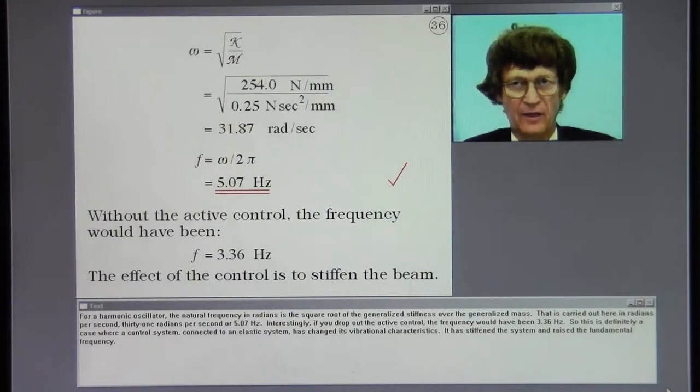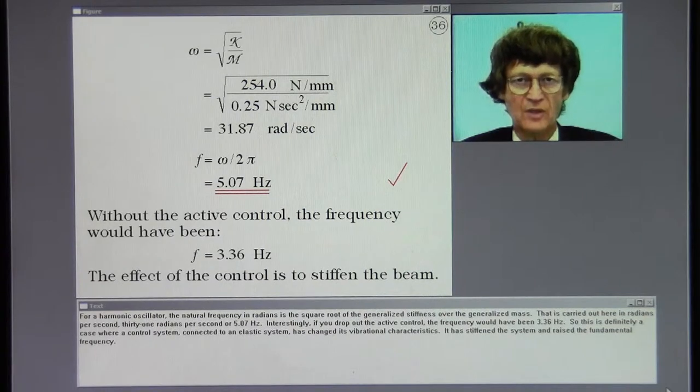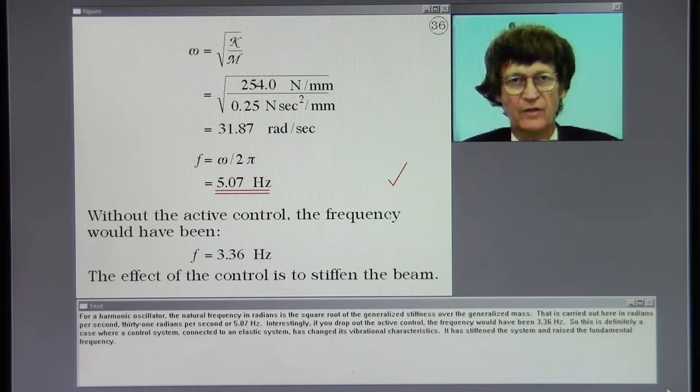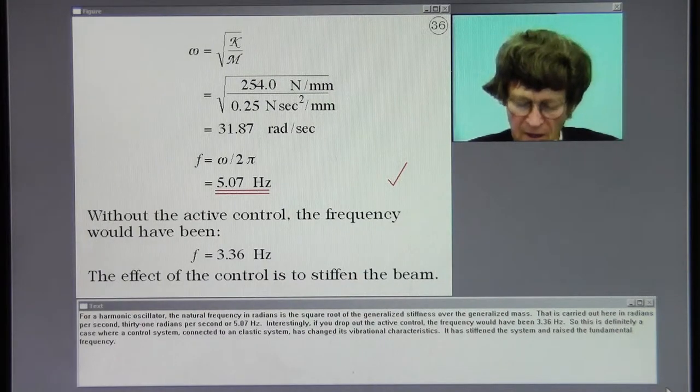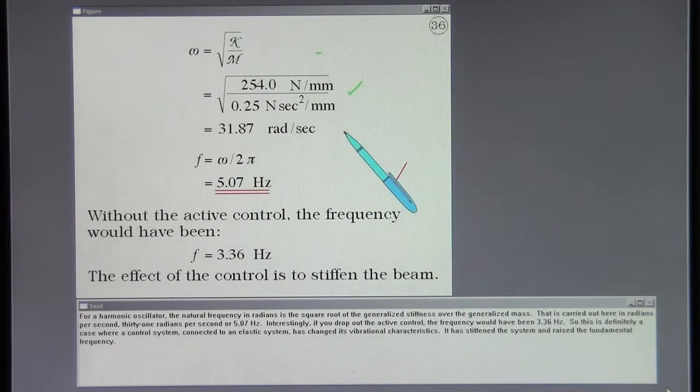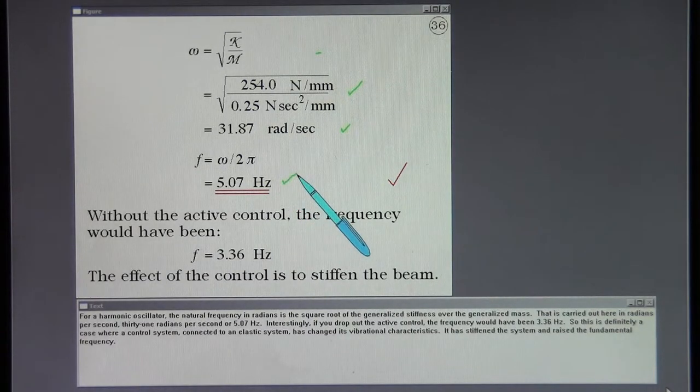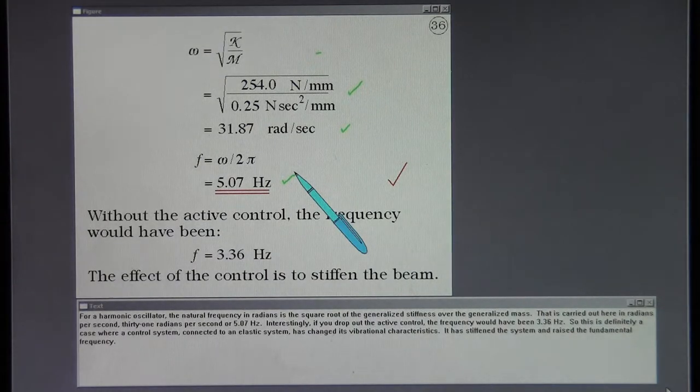For harmonic oscillator the natural frequency in radians is the square root of the generalized stiffness over the generalized mass. That is carried out here, 31 radians per second or 5.07 hertz. Interestingly if you drop out the active control the frequency would have been 3.36 hertz. So this is definitely a case where a control system connected to an elastic system has changed its vibrational characteristics. It has stiffened the system and raised the fundamental frequency.